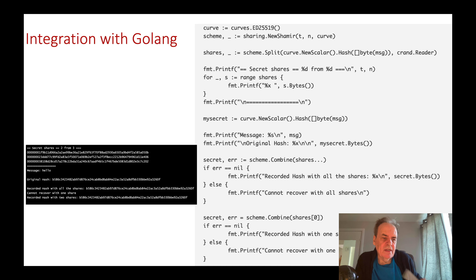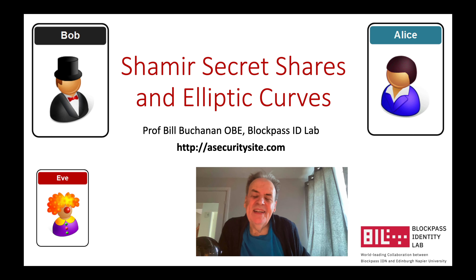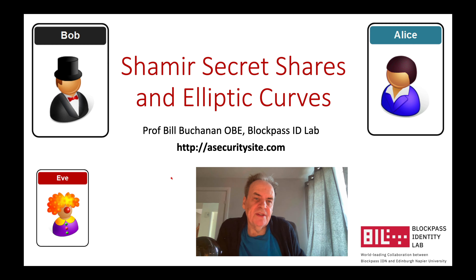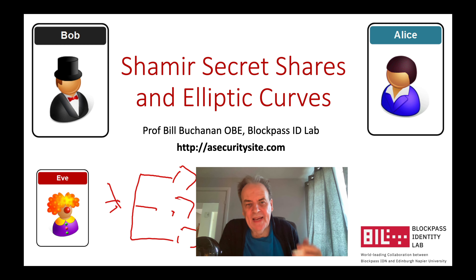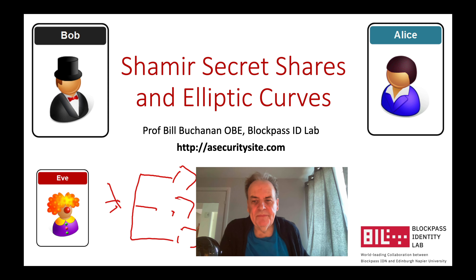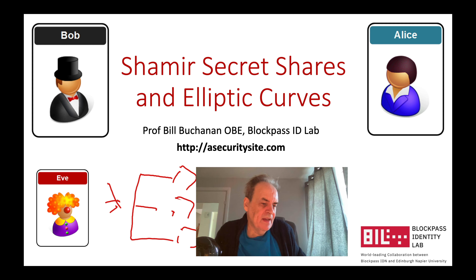Shamir secret sharing is an excellent method for splitting up encryption keys. You might back up an encryption key stored in three places, and only when two of those entities come together can you rediscover the key. You can also apply it to data, splitting it into different shares so that only when the required shares are reunited can you reveal the data.